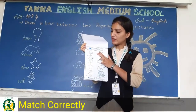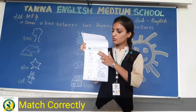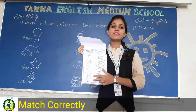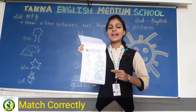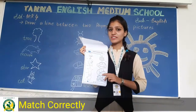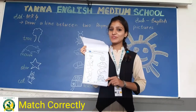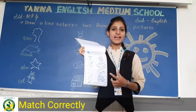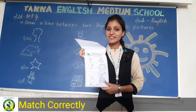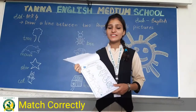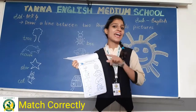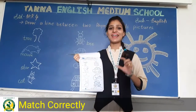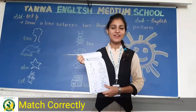यहाँ पर क्या करना है? Draw a line between the two rhyming words picture. आपको rhyming words picture के बीच में एक line draw करनी है. तो उससे पहले हमें पता होना चाहिए कि rhyming words कौन से होते हैं? जो same rhyme करता है उसे match करना है. तो rhyming words कैसे होते हैं? जैसे cat, mat, bat — जिसका same sound आ रहा है, same rhyme.